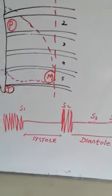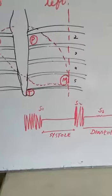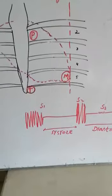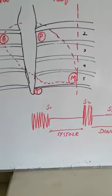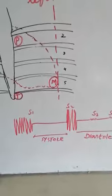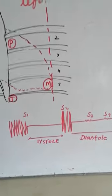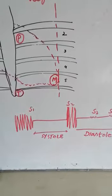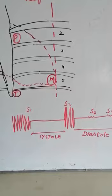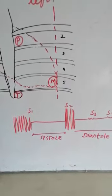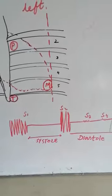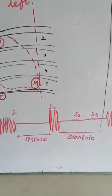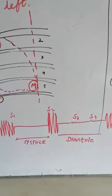These heart sounds are produced because of the closure of the heart valves. S1 is produced because of the closure of the atrioventricular valves. S2 is produced because of the closure of the semilunar valves — the aortic and pulmonary valves. S3 may be present in a few young individuals normally; it is due to rapid inflow of blood from the atria into the ventricles, and may also be present in exercise, pregnancy, and heart failure. S4 is due to strong atrial contraction against a diseased ventricle, such as in stenosis of the AV valves; S4 is not present normally.